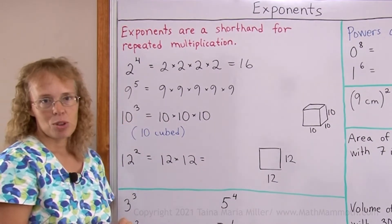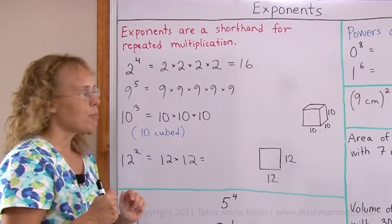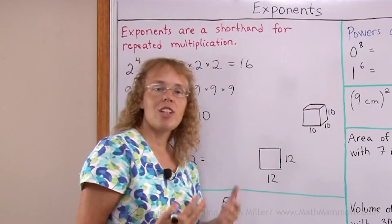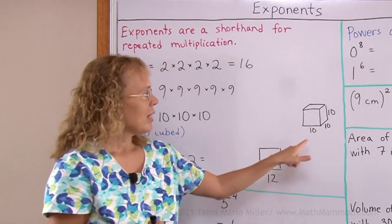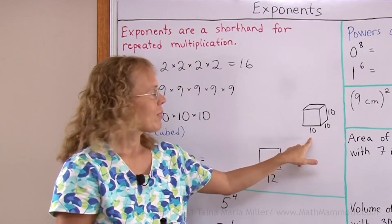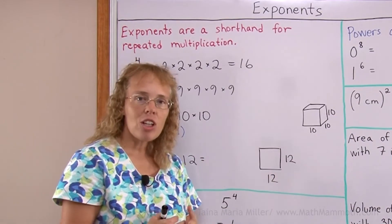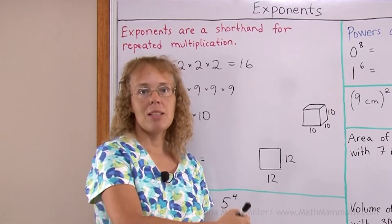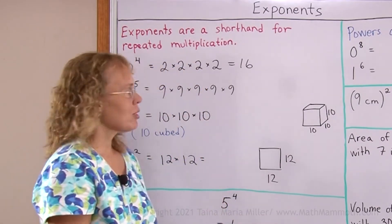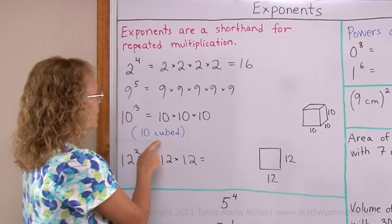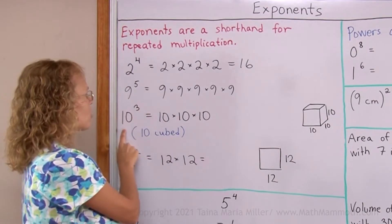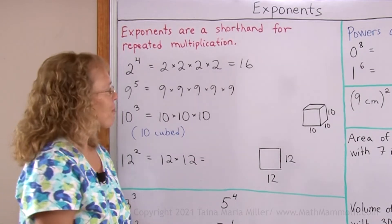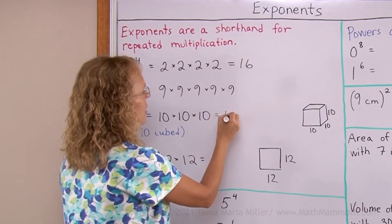This is ten to the third power. It has another name too, because it just so happens that when you multiply ten times ten times ten, it is also the volume of a cube where the side is ten. To find the volume of a cube, you multiply this times this times this, so it's ten times ten times ten, which equals one thousand cubic units. That is why this expression is also called ten cubed — more often than it is called ten to the third power. We can calculate it: it is one thousand.